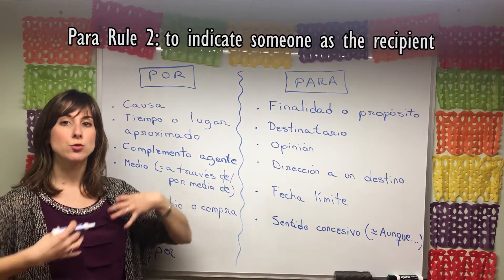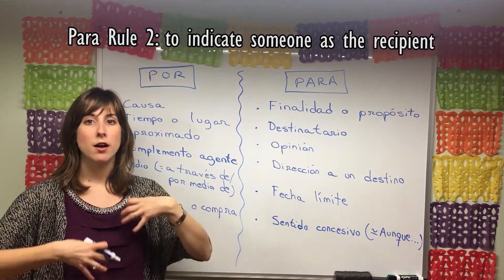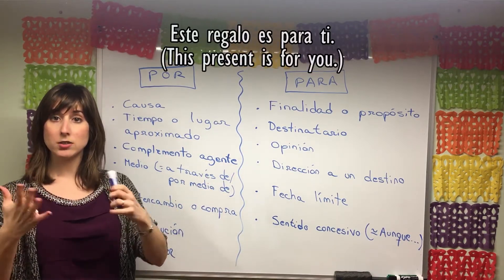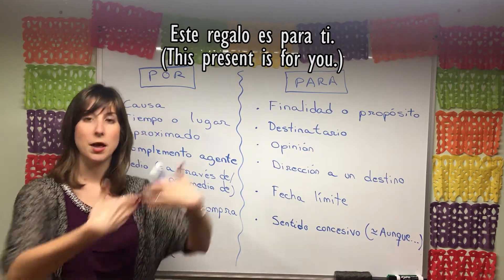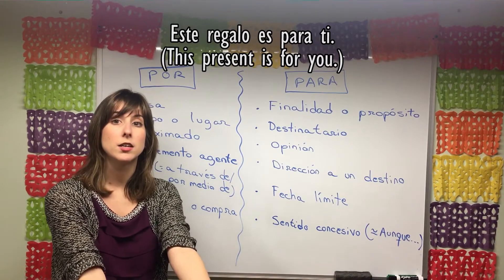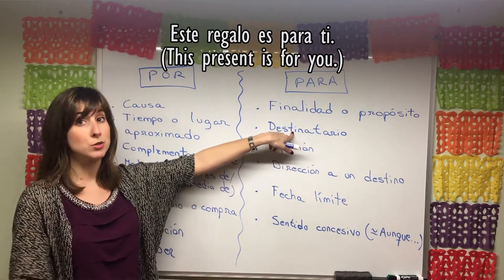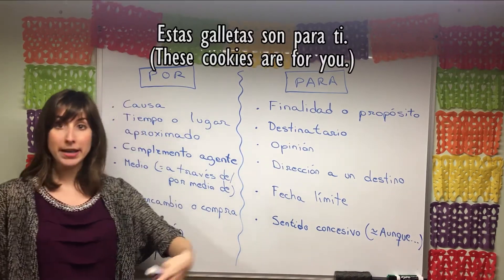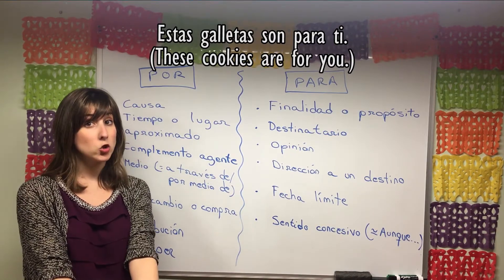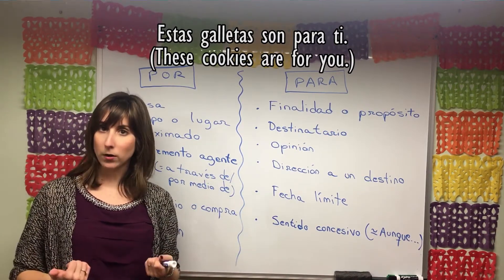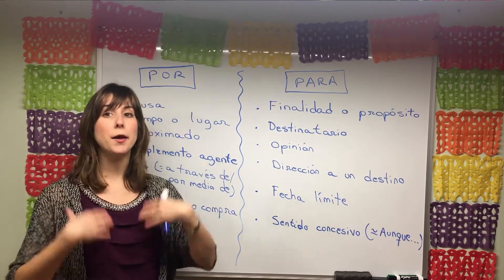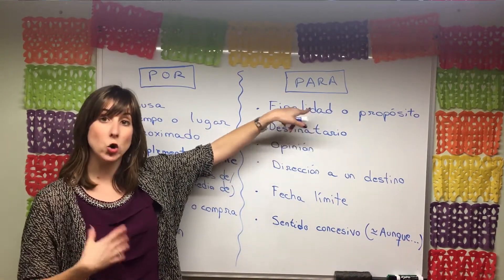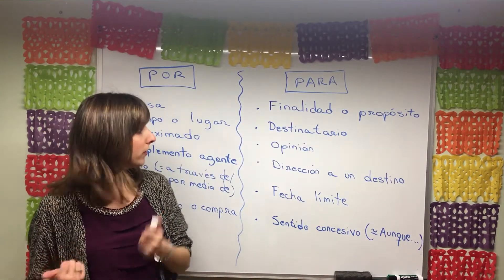We also use para for the destinatario — who's receiving something. 'Este regalo es para ti' — this present is for you. You are the one getting the present. 'Estas galletas son para ti' — I baked these cookies for you. 'Estoy aquí para ti, para ayudarte' — I'm here for you, to help you. Again, it's about who receives something or the purpose of an action directed toward someone.